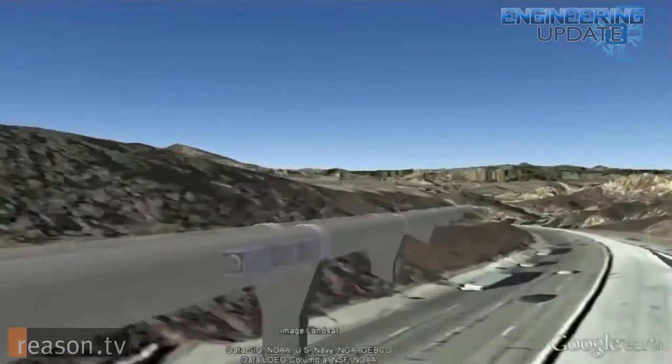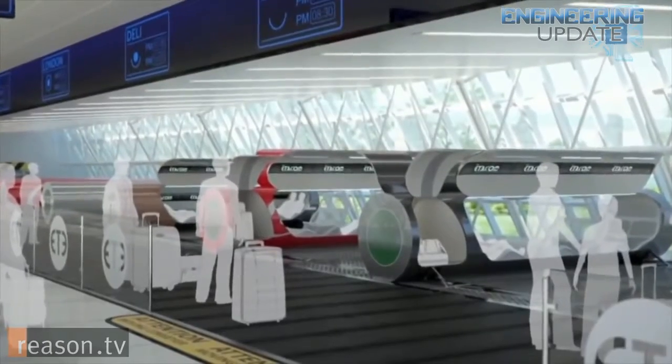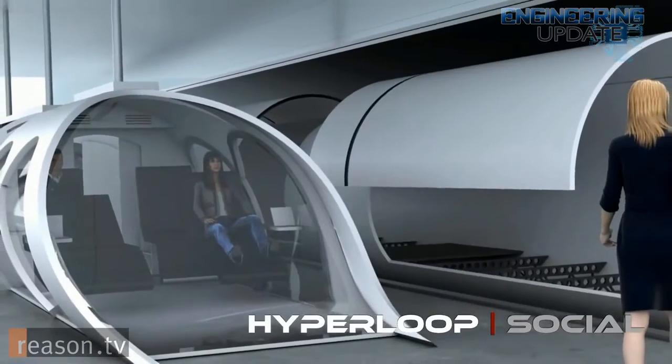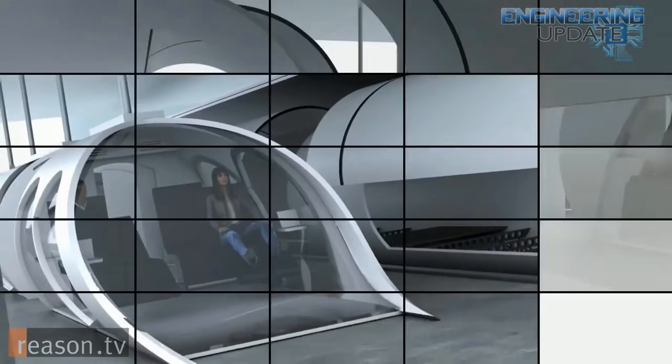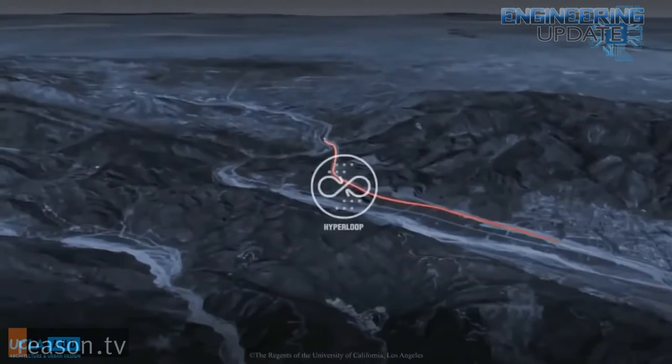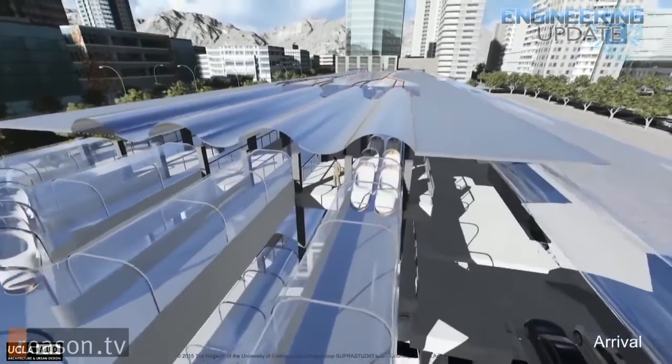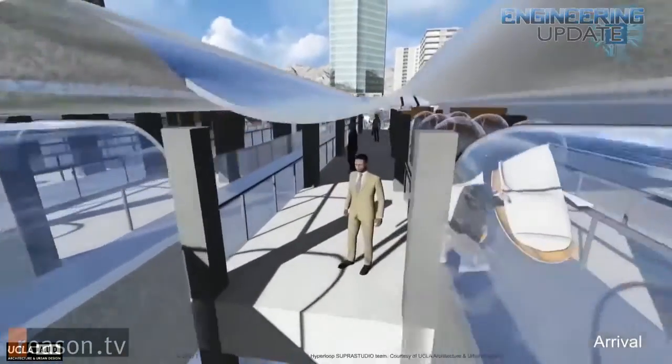Of course, with every new design concept comes safety concerns. In this case, Musk says a safe distance between the pods would be about 5 miles. So you could have about 70 pods between LA and San Francisco that leave every 30 seconds, and an emergency brake would also be designed into the pods. He also claims the transport system will be resistant to earthquakes and immune to poor weather.